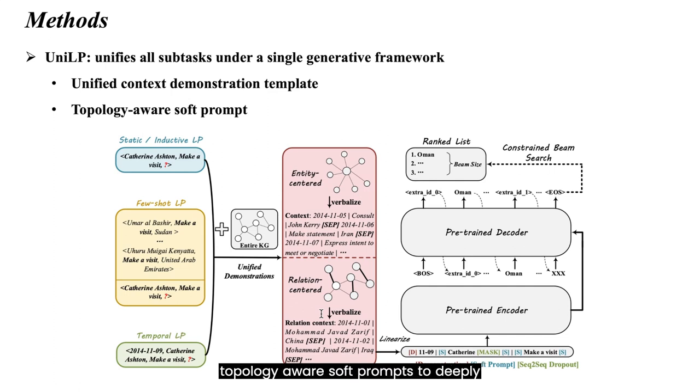We innovatively propose topology-aware soft prompts to deeply couple topology and text information in a contextualized manner, addressing the limitation of transformer architecture that may overlook important structural signals in KGs. For more details, see our upcoming paper.